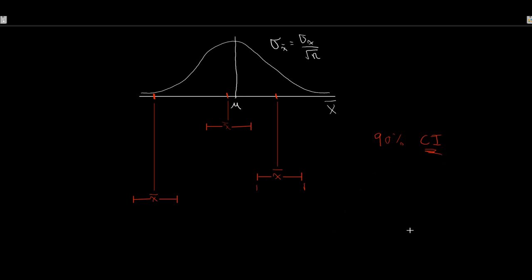What a confidence interval tells us is that if we continuously resampled x̄, we could work out the fuzz around it — x̄ plus or minus some number — such that if we calculated a 90% confidence interval, 9 out of 10 times our value of x̄ plus or minus the band would cover the true population mean. We don't know which one does and which one doesn't; that's the nature of sampling.